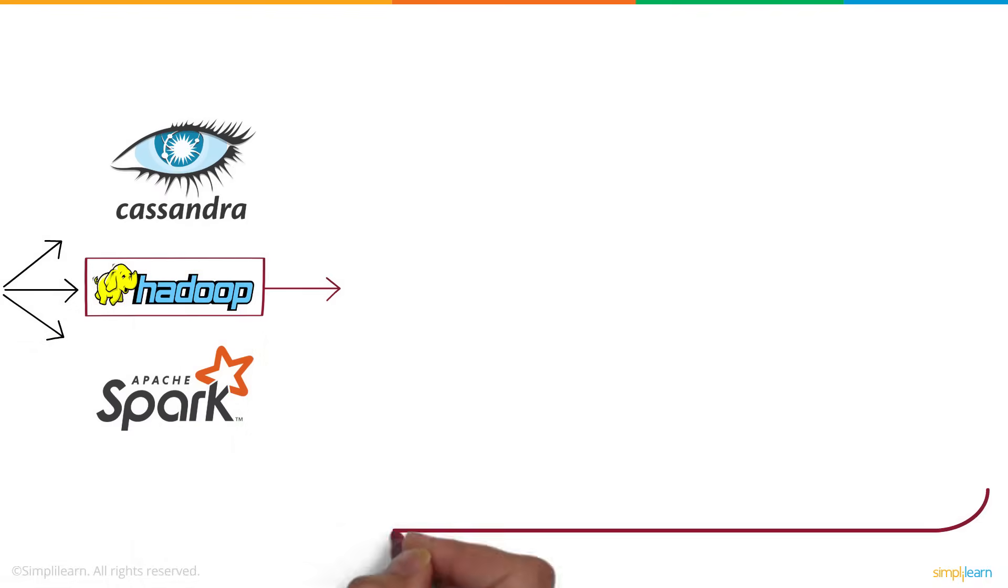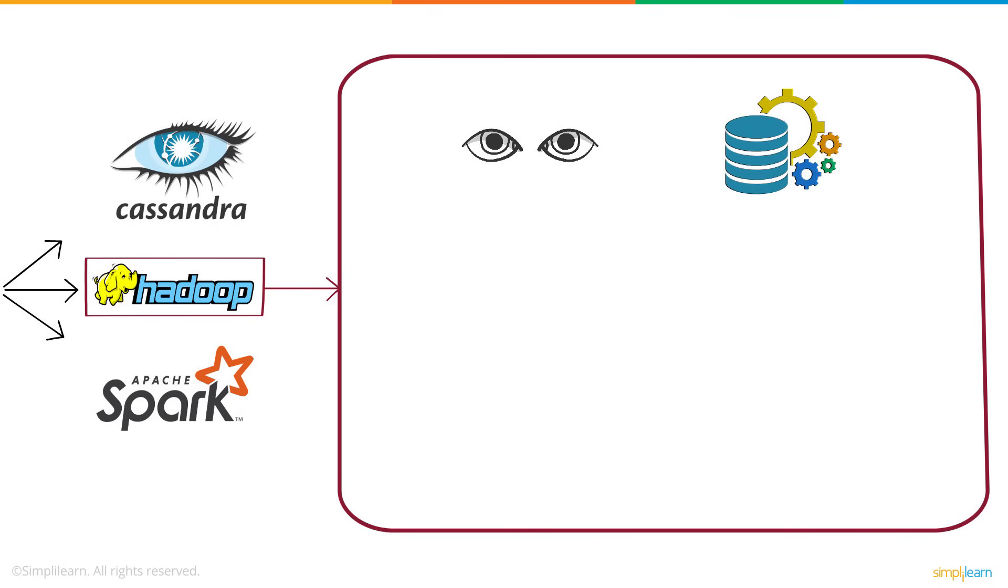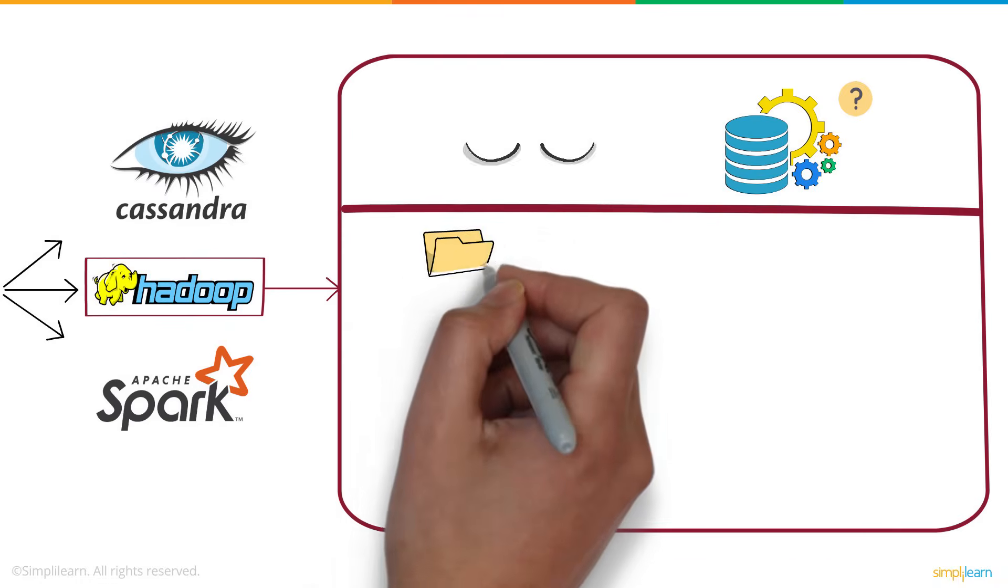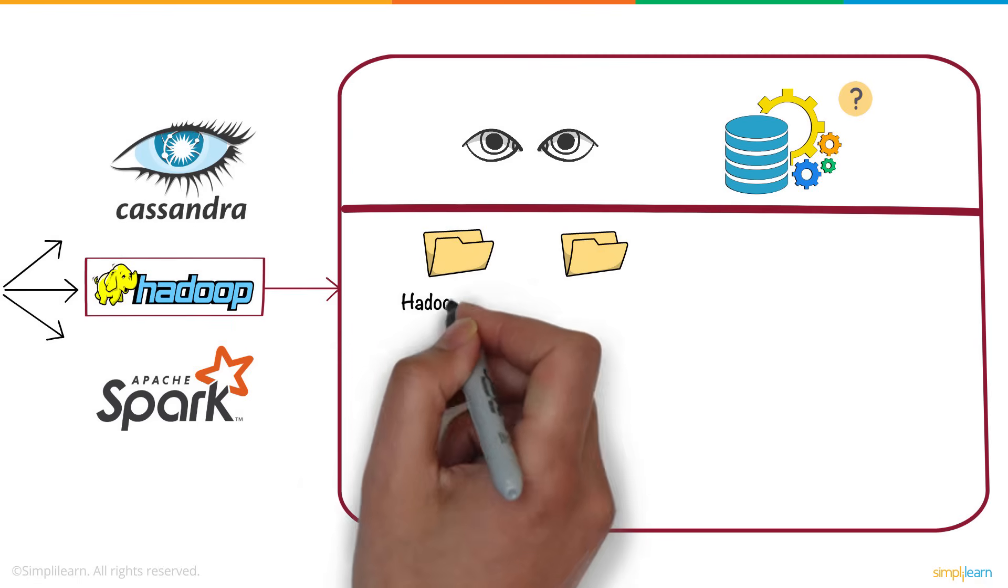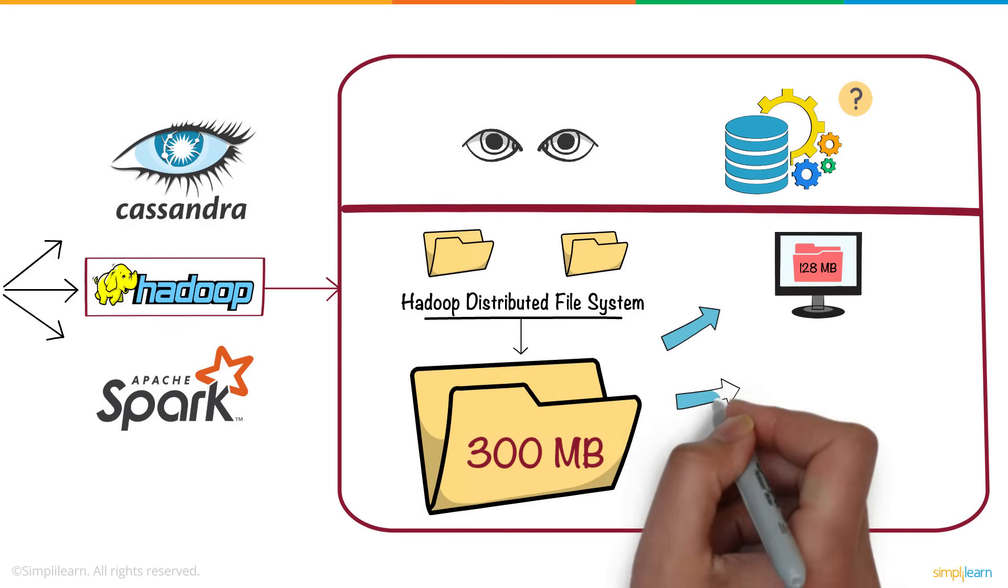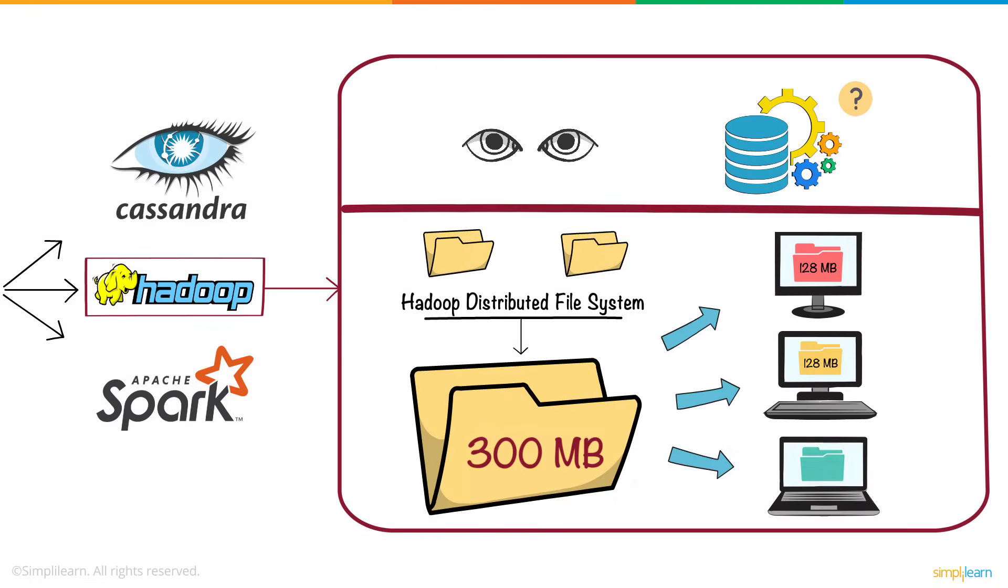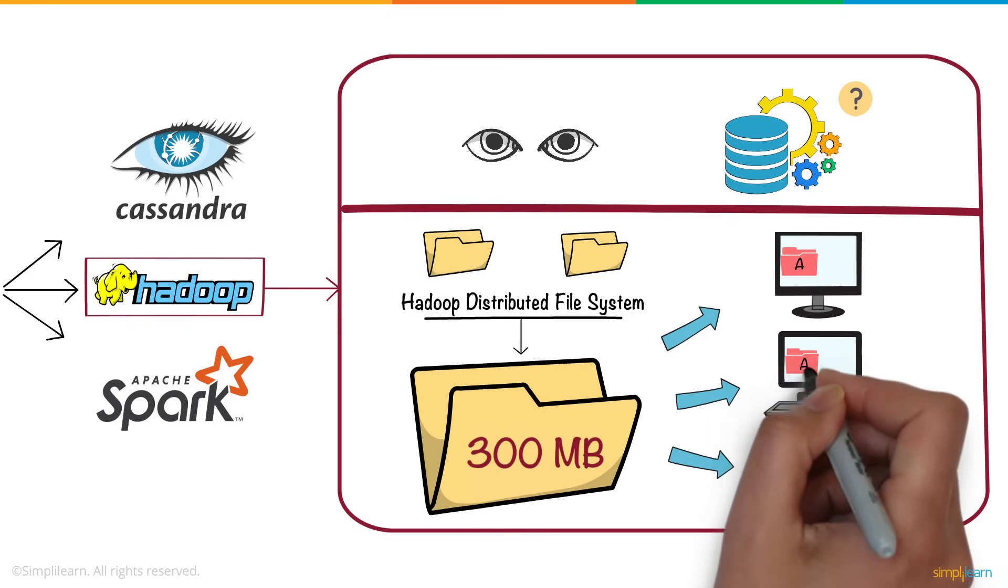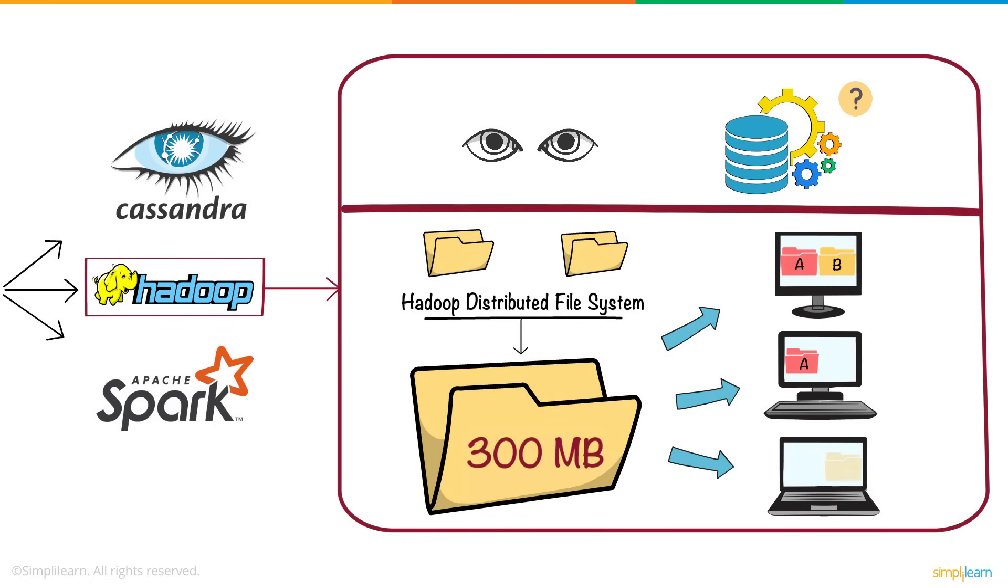Let us take Hadoop as an example and see how Hadoop stores and processes big data. Hadoop uses a distributed file system known as Hadoop Distributed File System to store big data. If you have a huge file, your file will be broken down into smaller chunks and stored in various machines. Not only that, when you break the file, you also make copies of it, which goes into different nodes.